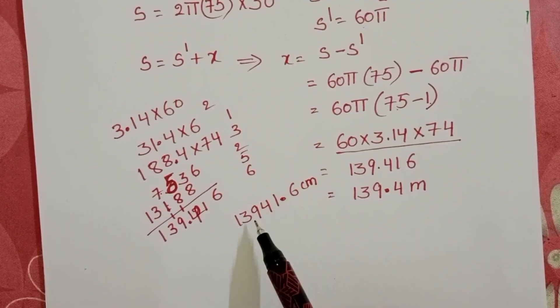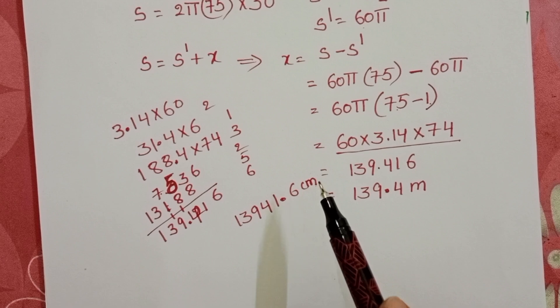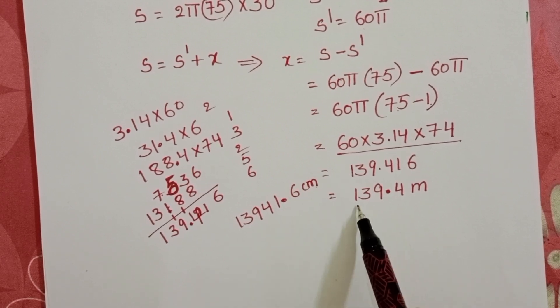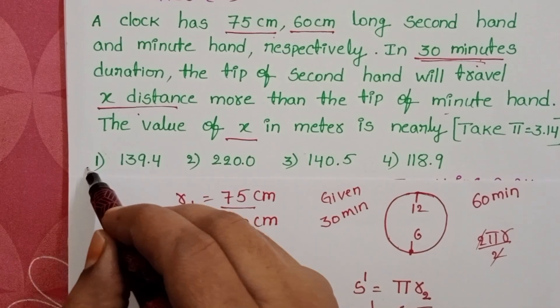This is approximately 139.4 meters. The value in centimeters is 13941.6 centimeters, but we want the answer in meters, so divided by 100 it becomes 139.4 meters. First option is correct.